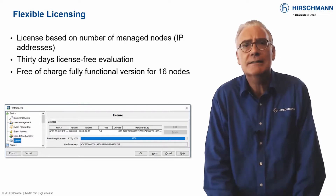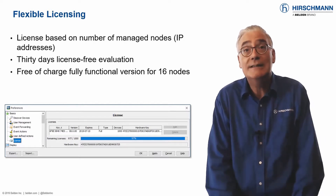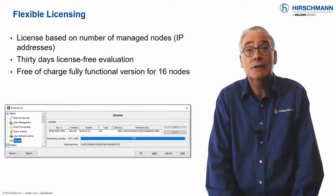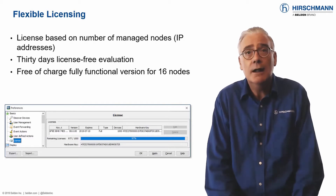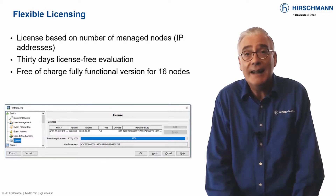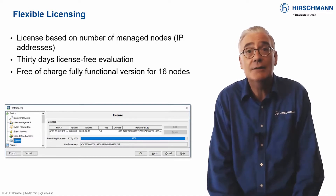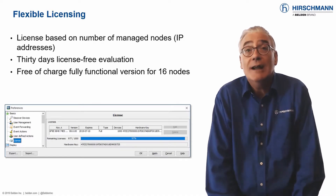Licenses are cumulative. So a license for 128 nodes and a license for 256 nodes would allow you to supervise up to 384 devices. Licenses are perpetual — each license you buy is valid forever. A license enables all functionality offered by Industrial HiVision. You do not pay extra for additional functionality.